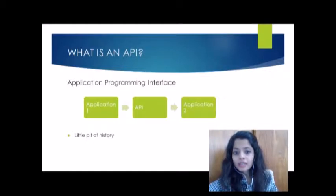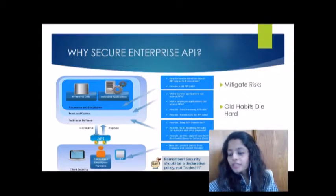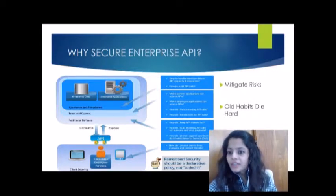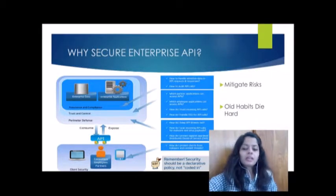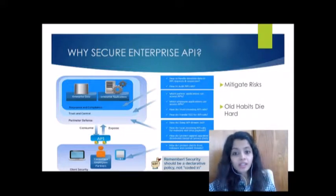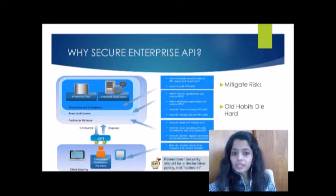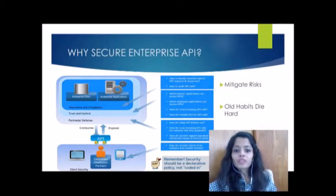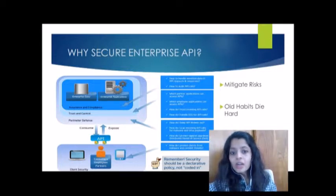Why is there a need to secure enterprise APIs? As you can see in the image, this is a model of a secure API with different layers, each answering key questions shown on the right-hand side. To mitigate risk, agencies must incorporate API security as part of their cybersecurity strategy. The risk of insecure APIs is not an issue of technology capability, but rather one of failing to properly use existing API security technology. In the modern computing era, API security should be a business case and not an afterthought.